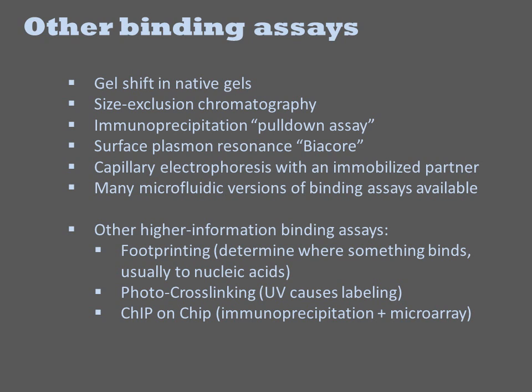Photocrosslinking involves modifying one of the partner biomolecules with a crosslinkable moiety such as benzophenone. Upon irradiation with UV light, that moiety will react with nearby nucleophiles on the partner biomolecule. You can then determine chemically which residues on the partner became crosslinked, and thus are near the labelling site in the complex.